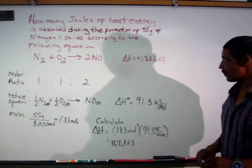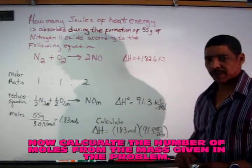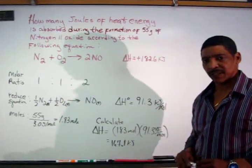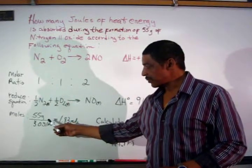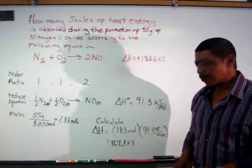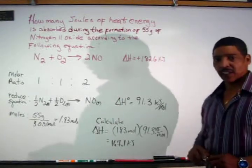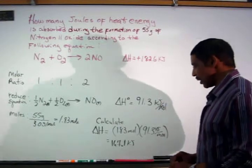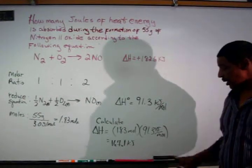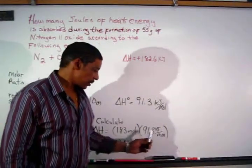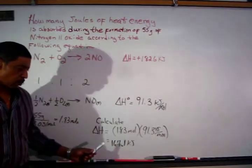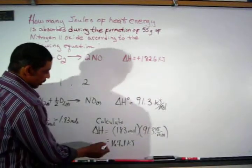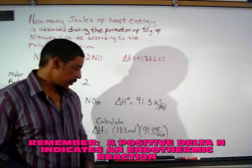Now it is a simple matter of finding the moles of N2O provided in the practice problem. We are given 55 grams of N2O. To find moles of N2O, simply divide by the molar mass: 55 grams divided by 44 grams per mole equals 1.83 moles. To find the amount of heat absorbed during the formation of 1.83 moles of N2O, simply multiply 1.83 moles times 91.3 kJ per mole. This gives a value of 167.1 kJ.